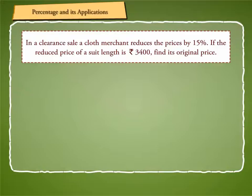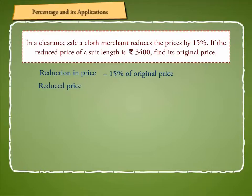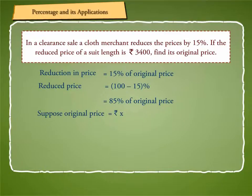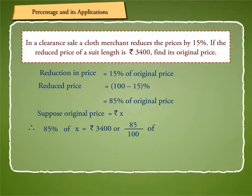To solve this, we have: Reduction in price is equal to 15% of original price. Reduced price is equal to 100 minus 15%, or 85% of original price. Suppose original price is equal to Rs. X. Therefore, 85% of X is equal to Rs. 3,400, or 85 by 100 of X is equal to Rs. 3,400.